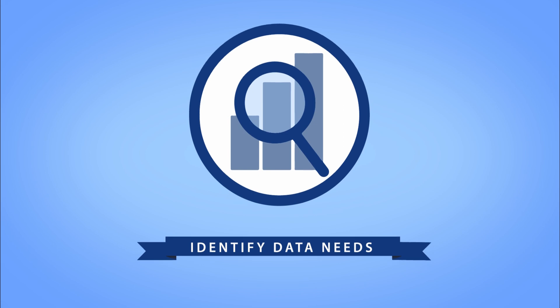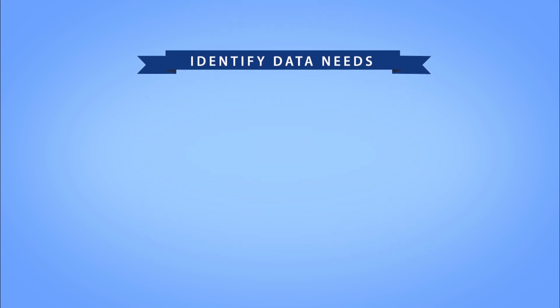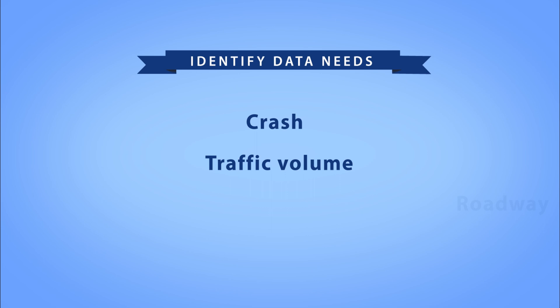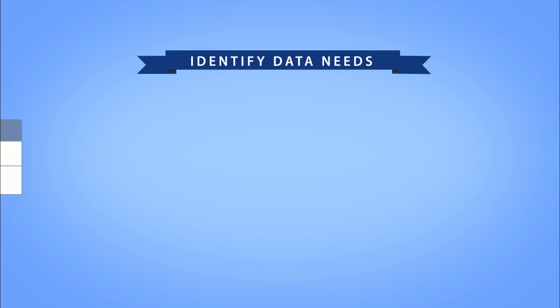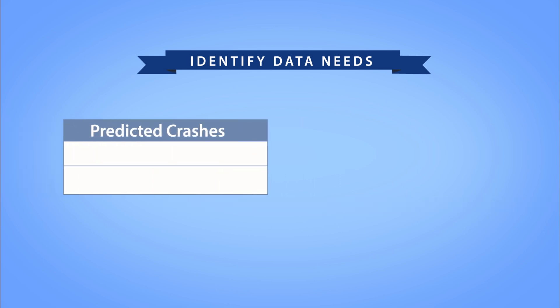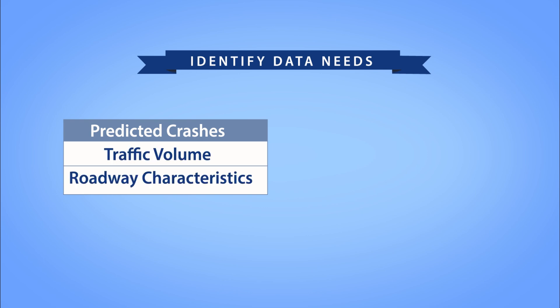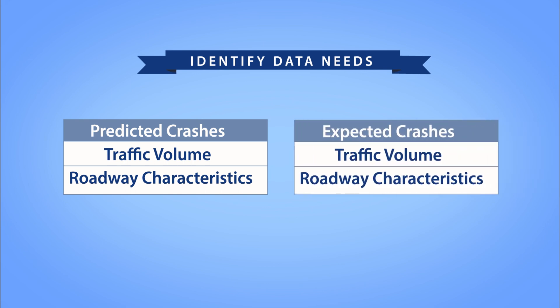Now let's discuss step two — identifying data needs. In general, you need three categories of data to apply the predictive method: crash data, traffic volume data, and roadway characteristics data. To estimate predicted crashes, you only need the traffic volume for existing or future conditions and the roadway characteristics associated with the facility. If you decide it is appropriate to estimate the expected crashes, then you will also need the site-specific crash history.